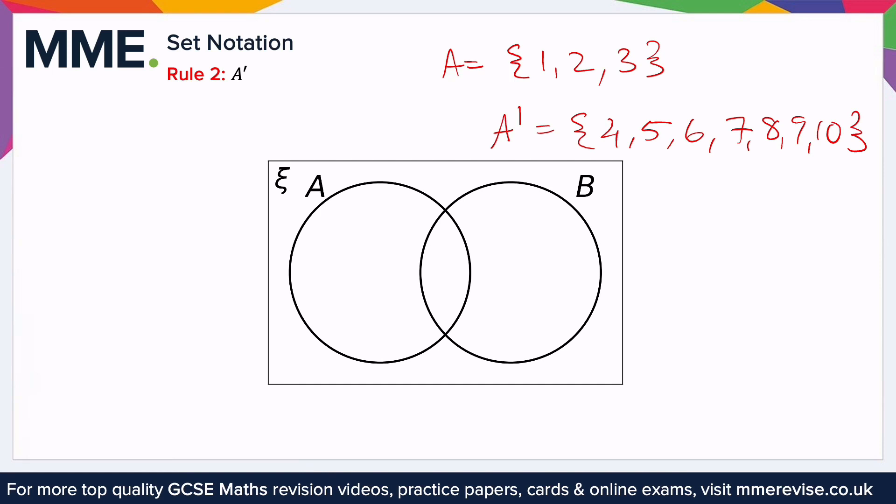So how can we see this on the Venn diagram? It is everything that isn't contained within the circle A. So it's the rest of B, except the bit that overlaps A, because of course anything in that middle bit is in A and in B, and we don't want anything that is in A. And then everything around the outside here, because this is of course not in A or in B. So A dash means everything that is not in A.